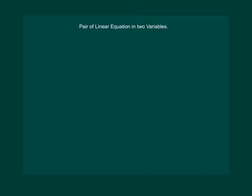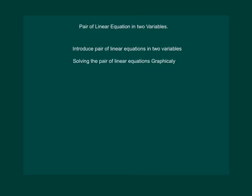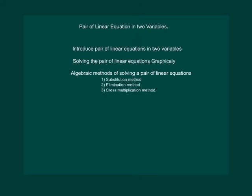Pair of Linear Equations in Two Variables. In this chapter, we will first introduce you to pair of linear equations in two variables, then proceed to solving these equations graphically. Next, we will learn algebraic methods of solving the pair of linear equations, which includes the substitution method, elimination method, and cross multiplication method. Finally, we will learn equations reducible to a pair of linear equations in two variables.